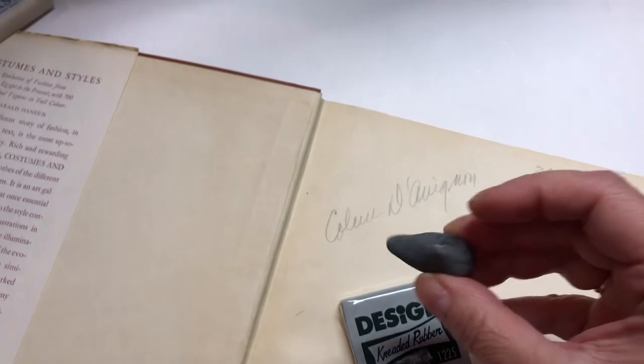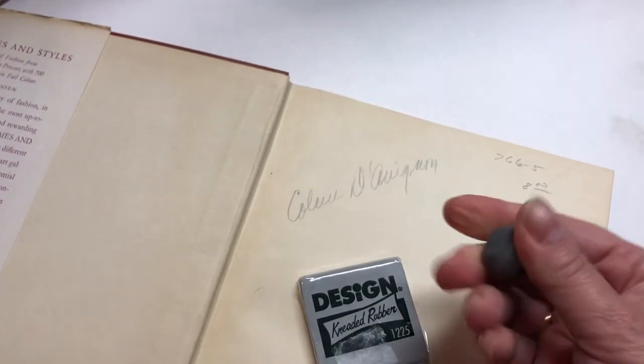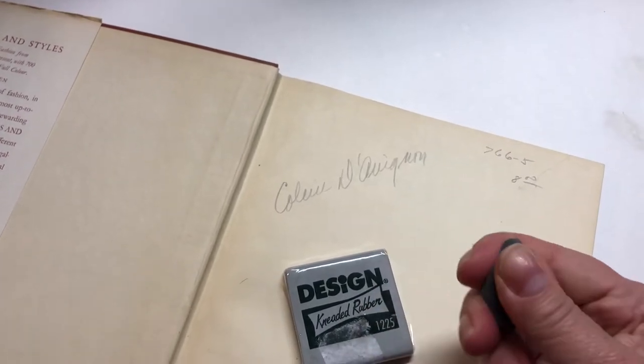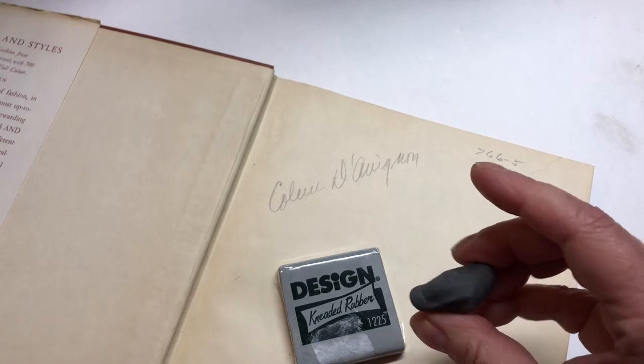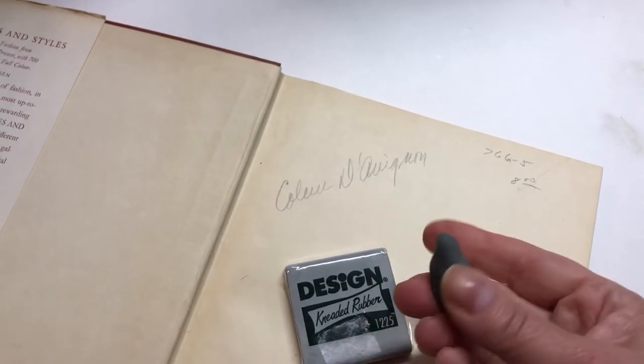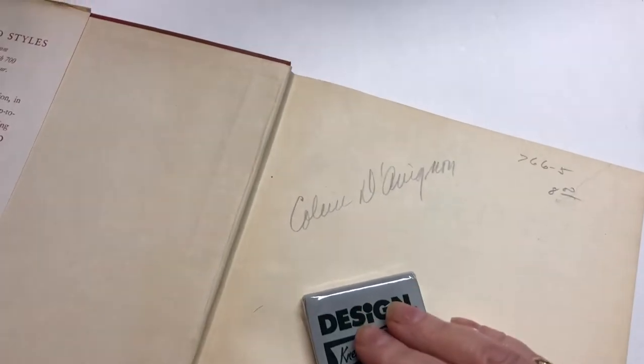...that after you use them to erase something, you just knead the dark spot from the eraser back into the eraser and it's gone and it's ready to use again. So the main idea for erasing pencil marks from...